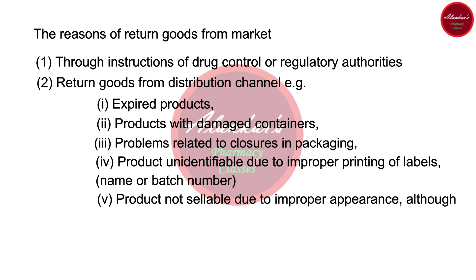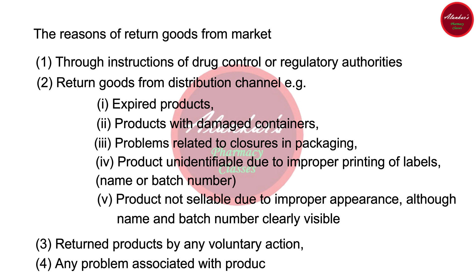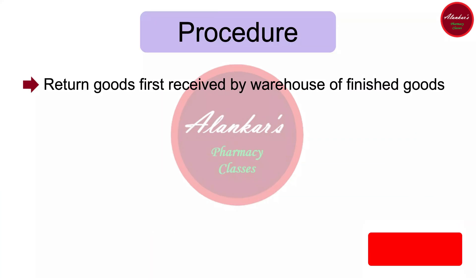There may be a case in which a product may not be saleable due to improper appearance, although the name and the batch numbers are clearly visible. Other reasons include products returned by any voluntary action by the pharmaceutical industry itself, and lastly, any problem associated with the product reported by customers. These are all the reasons by which a pharmaceutical industry may receive returned goods from the market.